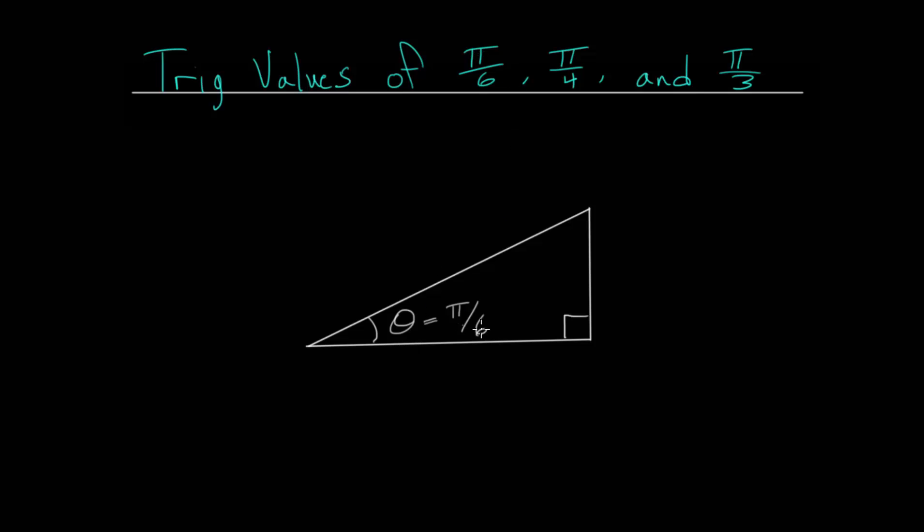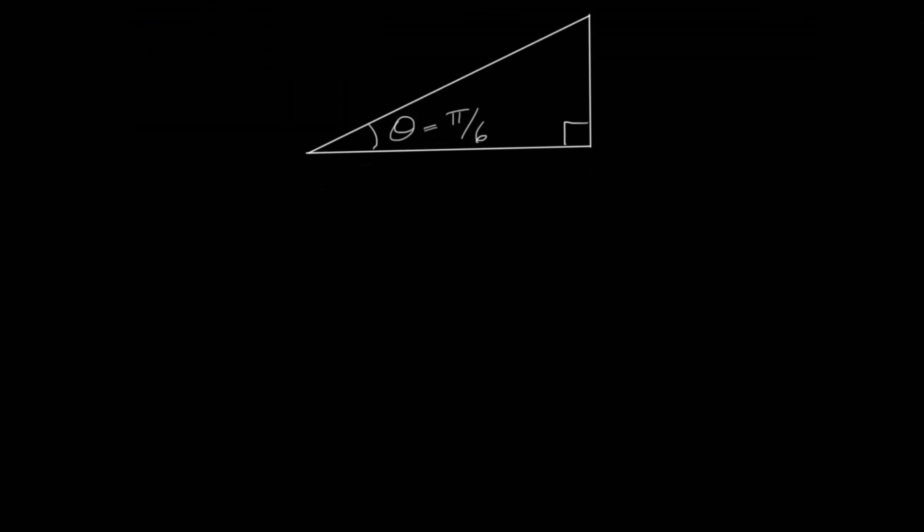But before we look at these triangles in radians, let's first convert these to degrees so that we can develop an intuition between the two. We know that the relationship between degrees and radians is that if we go all the way around the circle, 360 degrees, that this is equal to 2 pi radians.